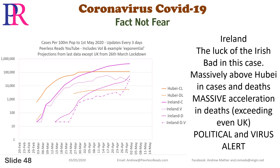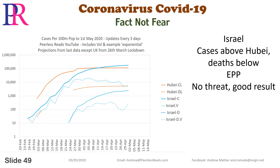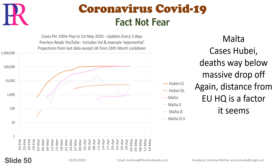Ireland: the luck of the Irish — bad in this case. Massively above Hubei in cases and deaths, with massive acceleration in deaths exceeding even the UK. Political and virus alert. Israel: cases above Hubei, deaths below. EPP, no threat — good result. Malta: cases at Hubei, deaths way below, massive drop-off. Again, distance from EU HQ seems to be a factor.